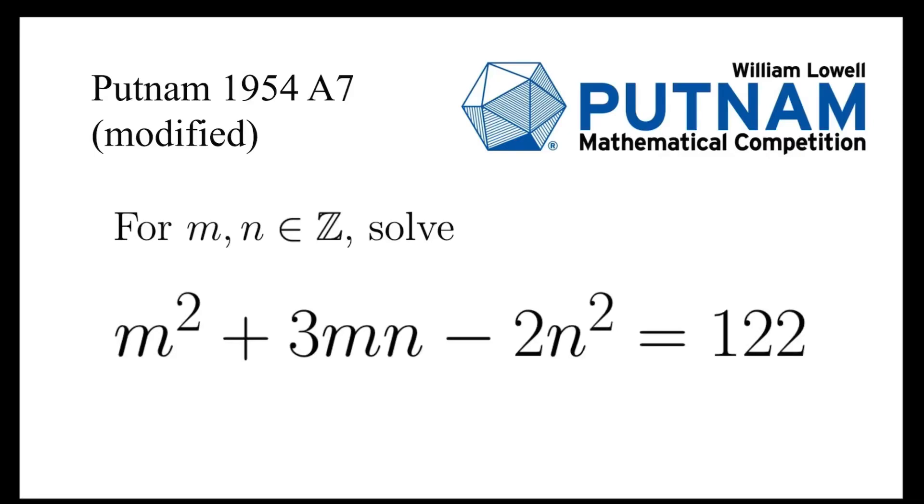In this video, we are going to find integers m and n such that m squared plus 3mn minus 2n squared equals 122. This is modified from a problem in Putnam 1954.